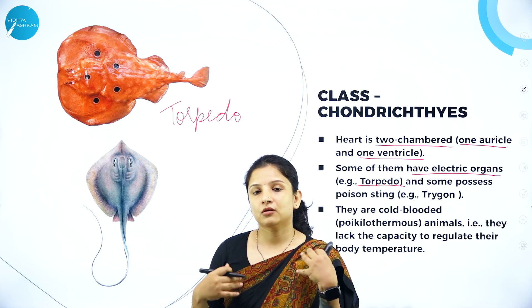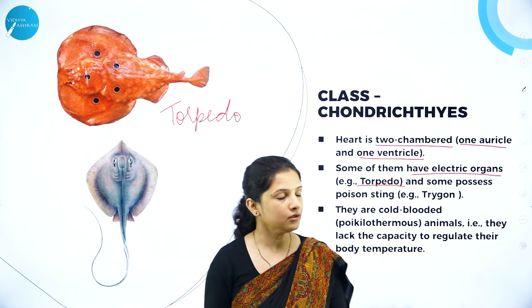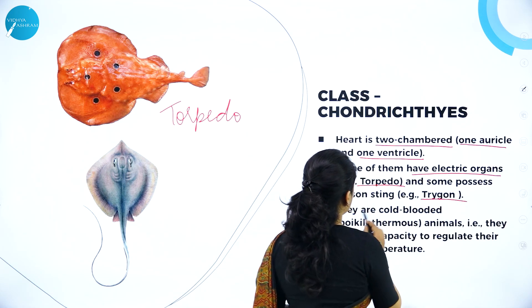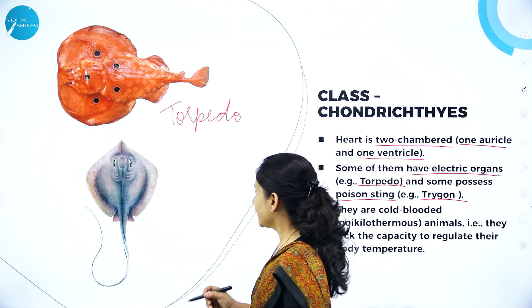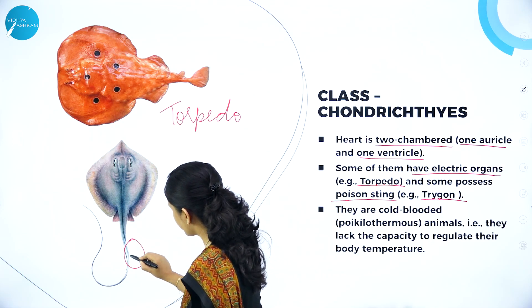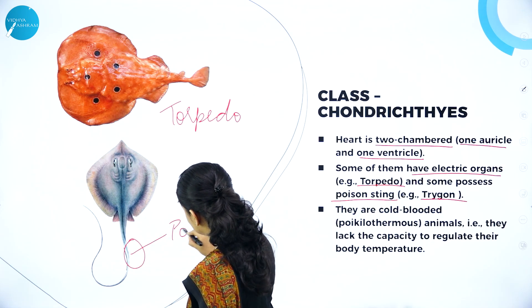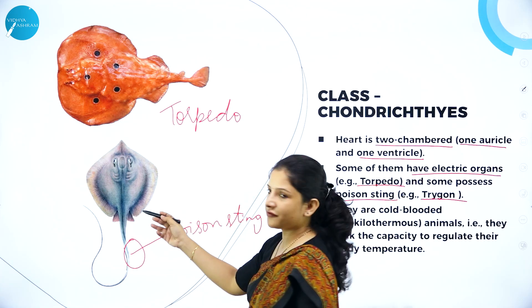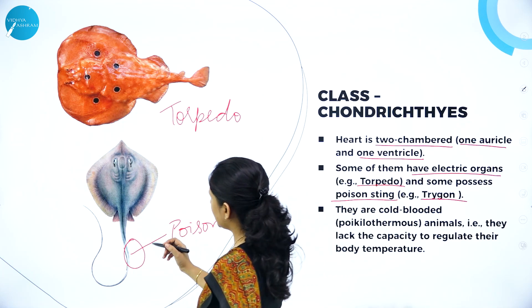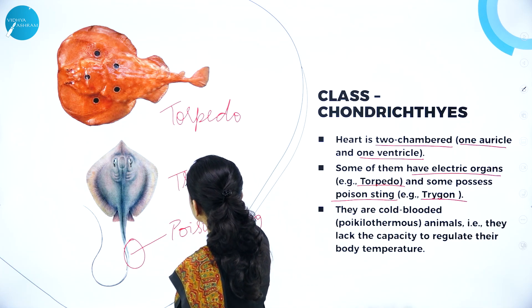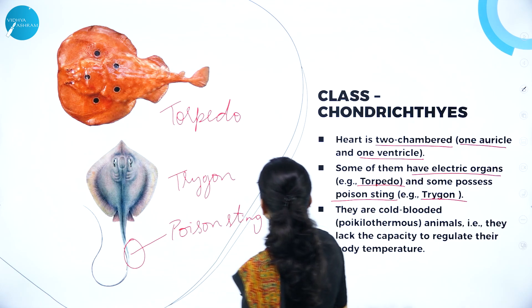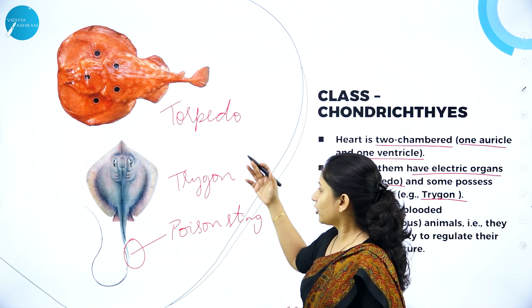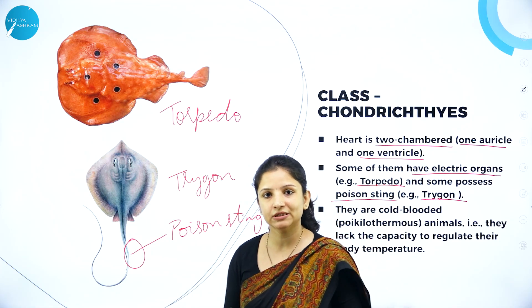Some of them, for example trigon, have a poison sting. If you look at trigon, at its tip there is a poison sting. This is a rayfish. They have a poison sting and this organism is called trigon. Torpedo and trigon both have defensive structures — torpedo has electric organs and trigon has a poison sting.